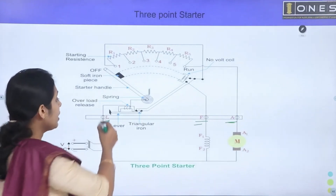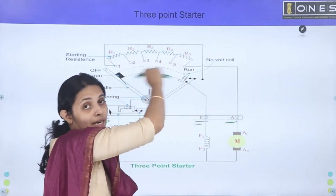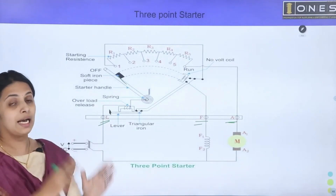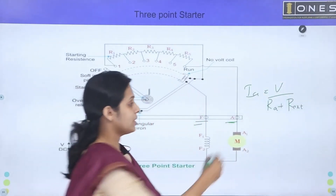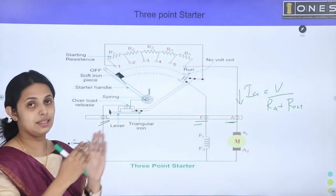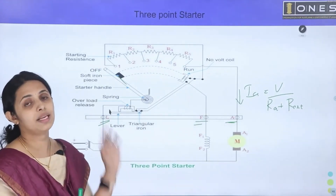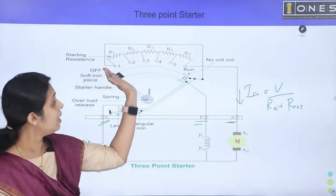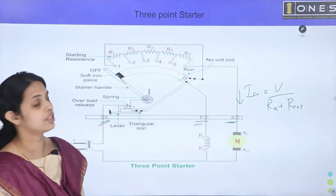When we move the starter lever, the starting resistance is gradually reduced. As the motor picks up speed, back EMF builds up and automatically reduces armature current. When the motor reaches full speed, the full resistance is cut out of the circuit.